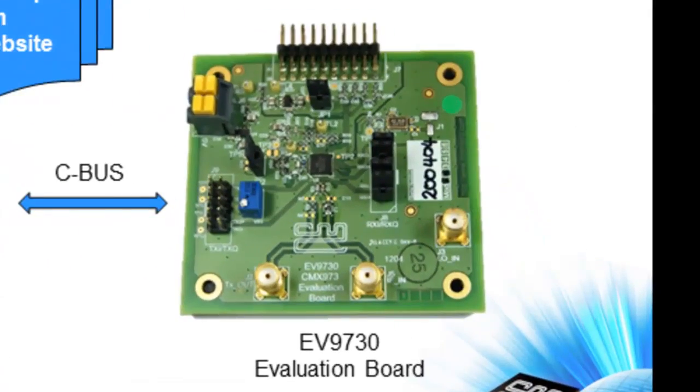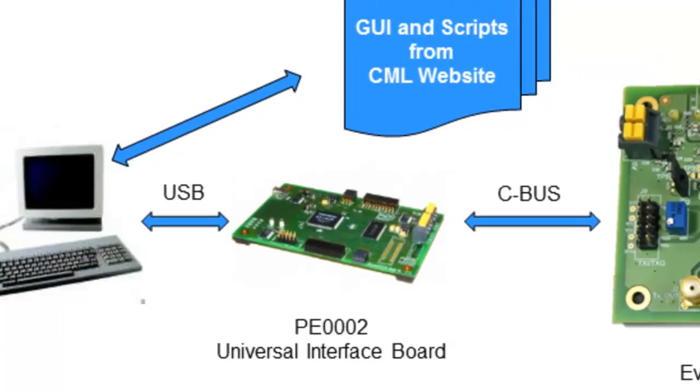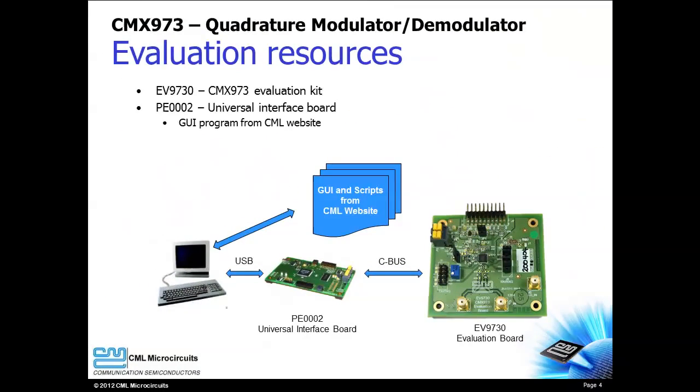The EV9730 is the evaluation kit for the CMX973. The optional PE-0002 PC interface card and its graphical user interface makes CMX973 evaluation fast and simple.